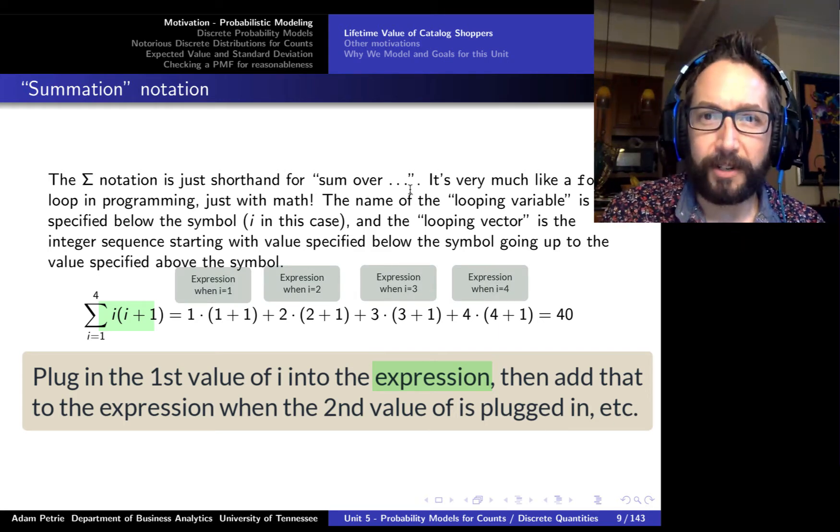Summation notation is going to allow us to write that compactly. Basically, what we write is the nugget, the expression that we want to be summing, the i times i plus 1, and then talk about what values of i do we want to loop through in order to get the final value of the sum. At the bottom of that summation notation, we'll say i is equal to 1 to give it a starting value, and at the top of that notation we'll give it the final value that i is going to take, with the understanding that it's going to go through that integer sequence 1, 2, 3, 4. So very much like a for loop.